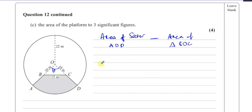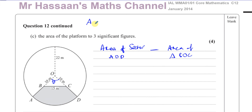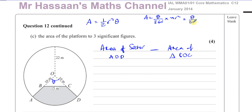The area of a sector is given by (1/2)R²θ, where θ is in radians. This comes from the IGCSE formula (θ/360) × πR²; replacing 360 with 2π gives (θ/2π) × πR², the π's cancel leaving (1/2)R²θ. This formula only applies when the angle is in radians.